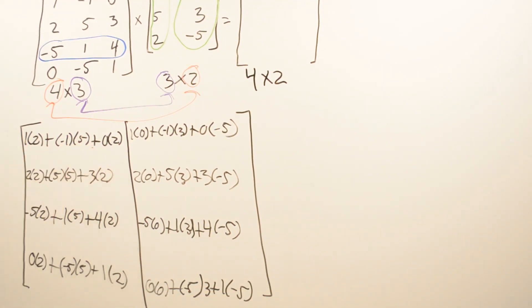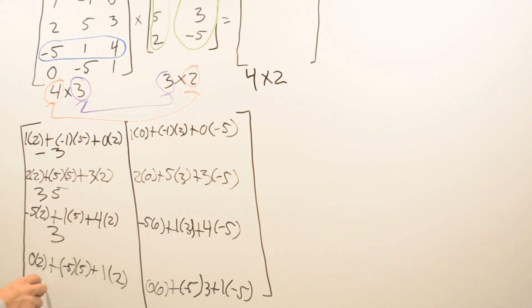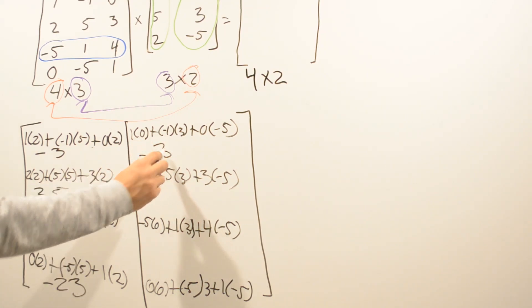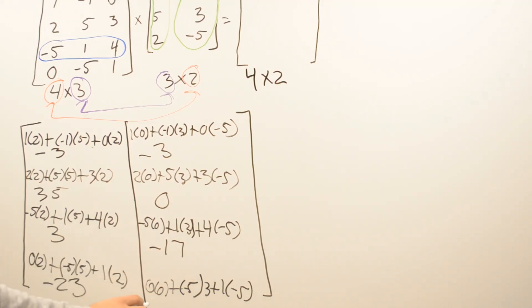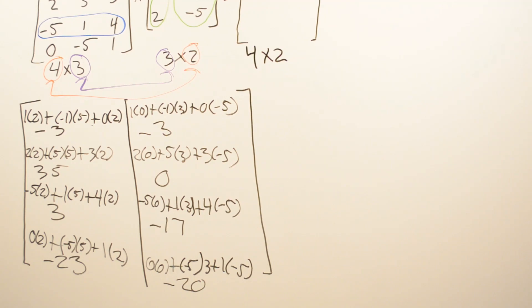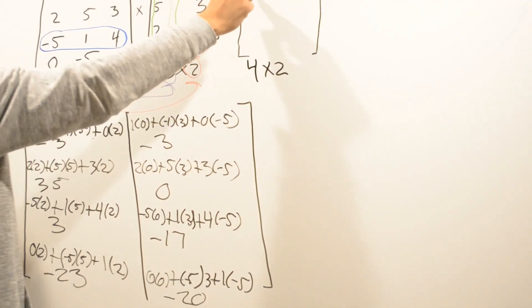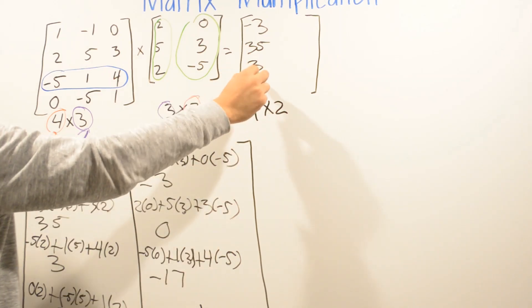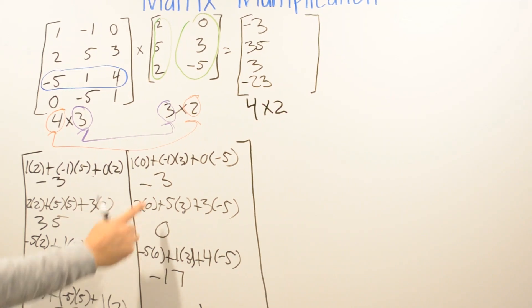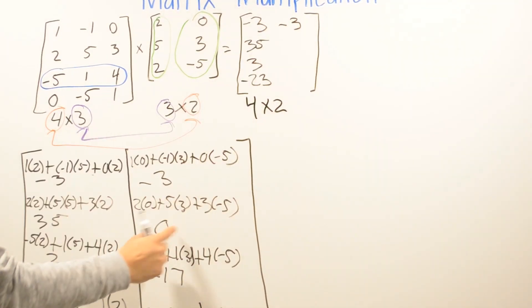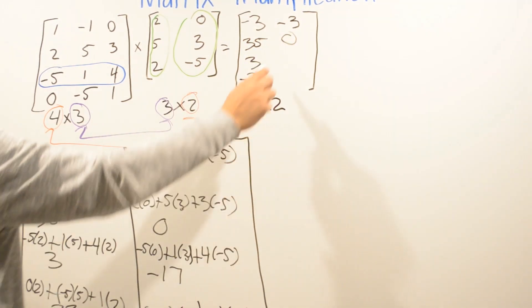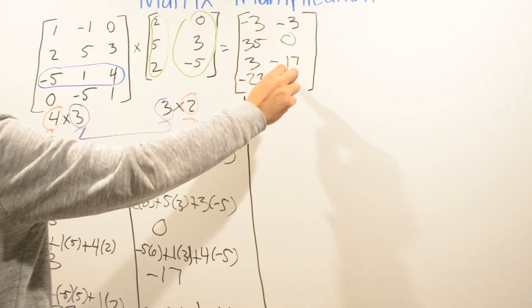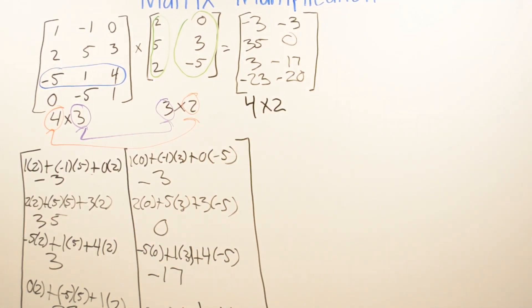After multiplying and adding all values, the final 4 by 2 answer matrix is: negative 3, 35, 3, negative 23, negative 3, 0, negative 17, and negative 20. That is the answer for this matrix multiplication problem.